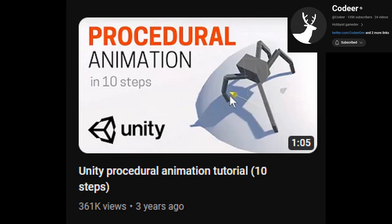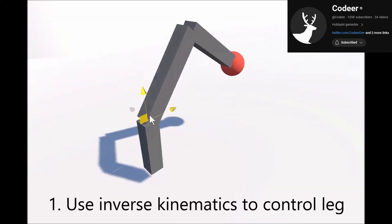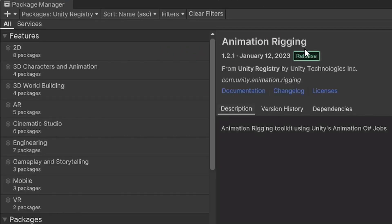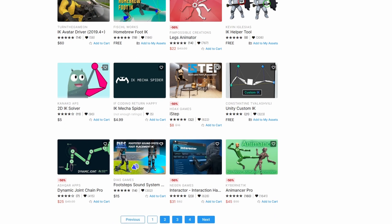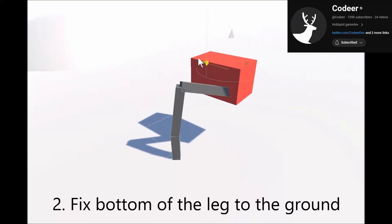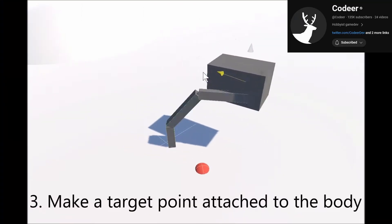When applying this to procedurally animated walking, I think these 10 steps from Qadir show it quite well. Firstly, use inverse kinematics to control the leg. I suggest using a solver setup built into the engine or an available asset as there are lots of IK tools available. Glue the foot to the ground and then make a target point attached to the body.